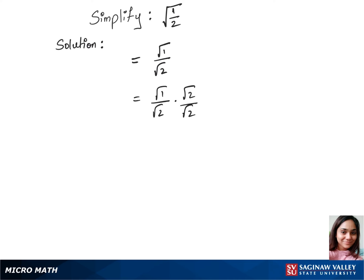This gives us — let's put the numbers under one root — which is root 1 times 2 over 2. This gives us root 2 over 2. This is our final answer.